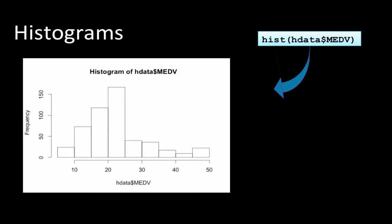We've already seen that we can compute measures of central tendency and measures of dispersion. Here we are plotting what is called a histogram of one of the attributes in our Boston housing data frame that we had created earlier. Here we are saying hist hdata dollar MEDV, median value of homes in a neighborhood. And this is what we get.